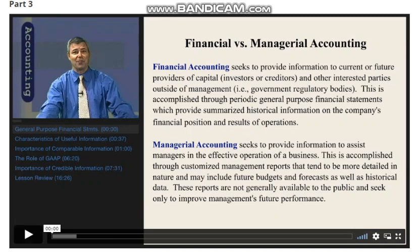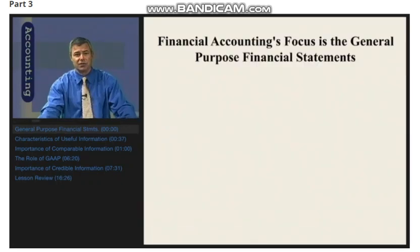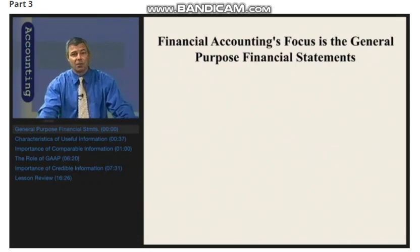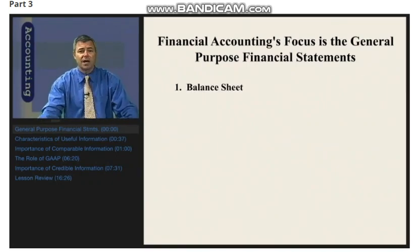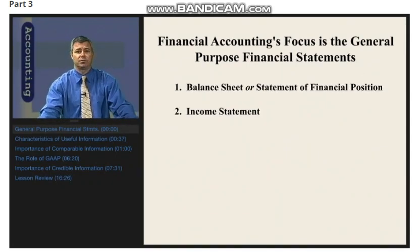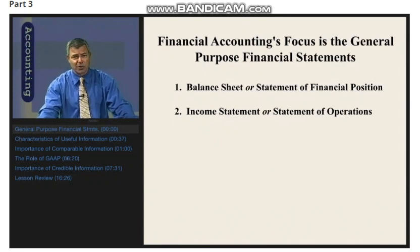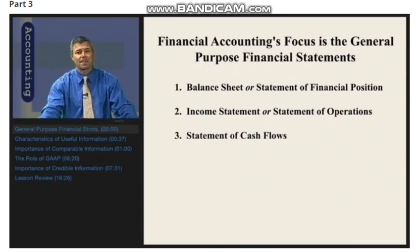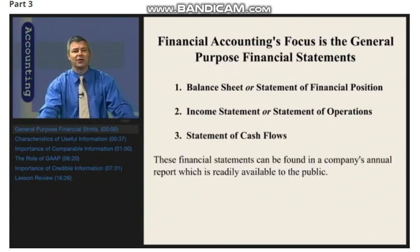Financial accounting's focus is financial statements. There are three general-purpose financial statements. One is a balance sheet, sometimes referred to as a statement of financial position. The second is referred to as an income statement, or sometimes a statement of operations, or statement of profits and losses. The third required general-purpose financial statement is a statement of cash flows, which specifically identifies the major inflows and outflows of cash. These financial statements can be found in a company's annual report.